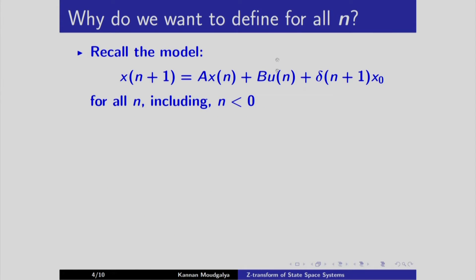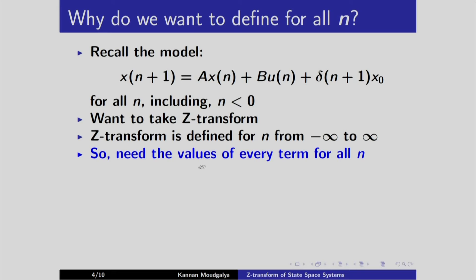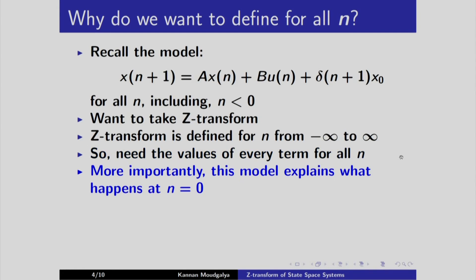The question is: why do we want to define this equation for all n? Because we want to take the Z transform, and our Z transform is defined for n from minus infinity to plus infinity. So we need the values of every term for all n. This model explains what happens at n = 0 and is valid for all n starting from minus infinity onward.